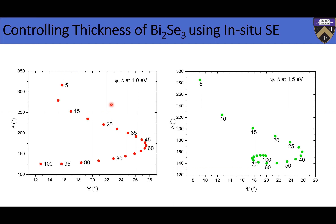Sometimes these curves don't have unique values — you don't know whether a given value corresponds to 20 nm or 90 nm. That's why you need to generate these curves at different energies. By doing curves at different energies, you can find the energy where the curves are most distinct from each other, and use that to control the thickness of your growth. This is one of the benefits for growth. You can also use feedback from ellipsometry to explore issues like desorption.